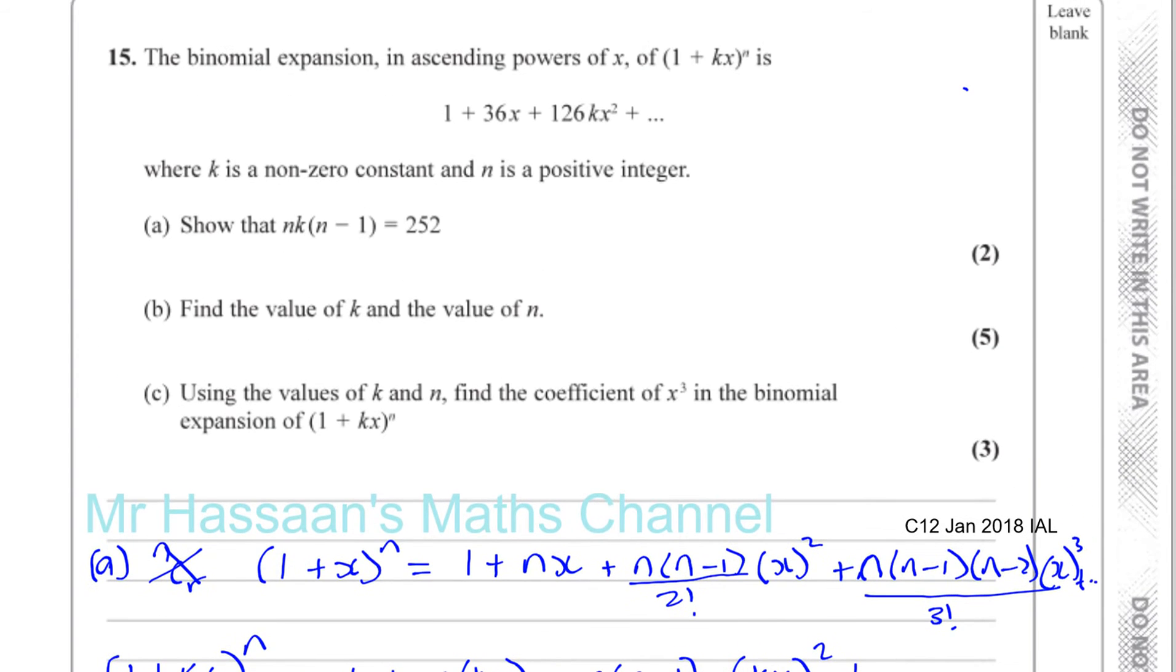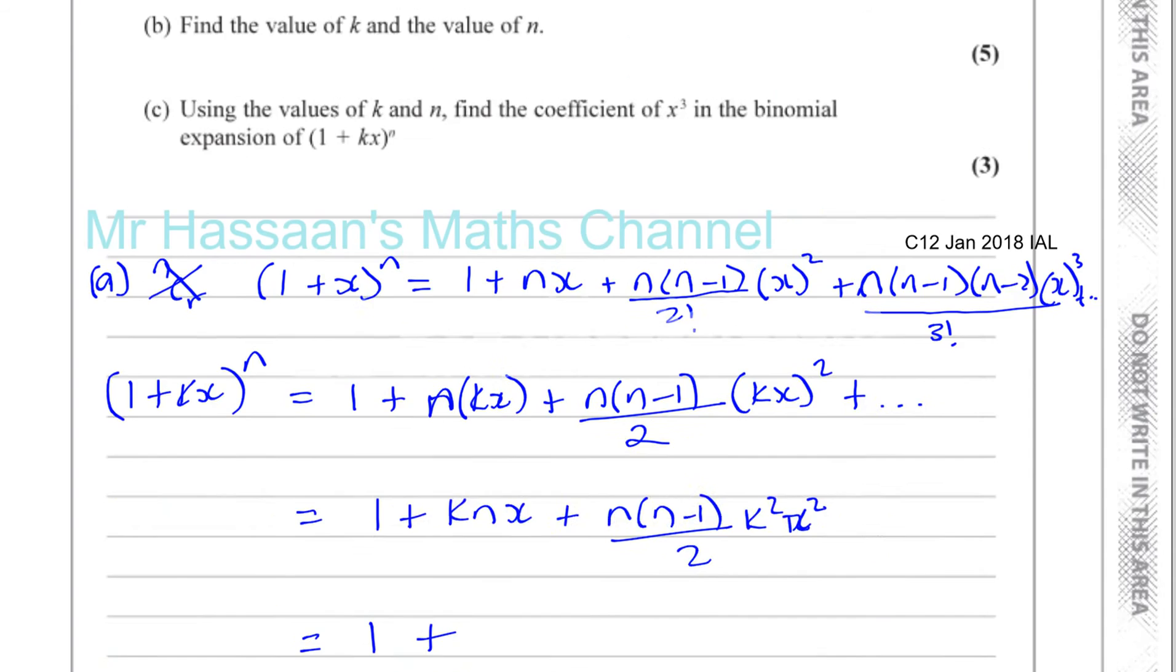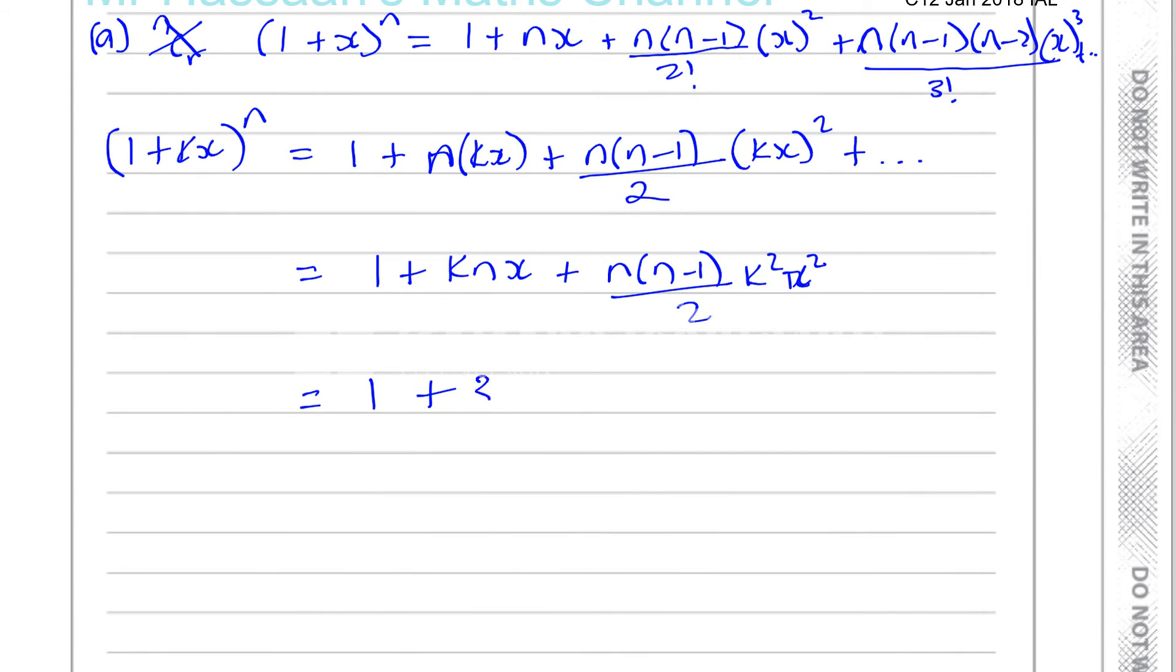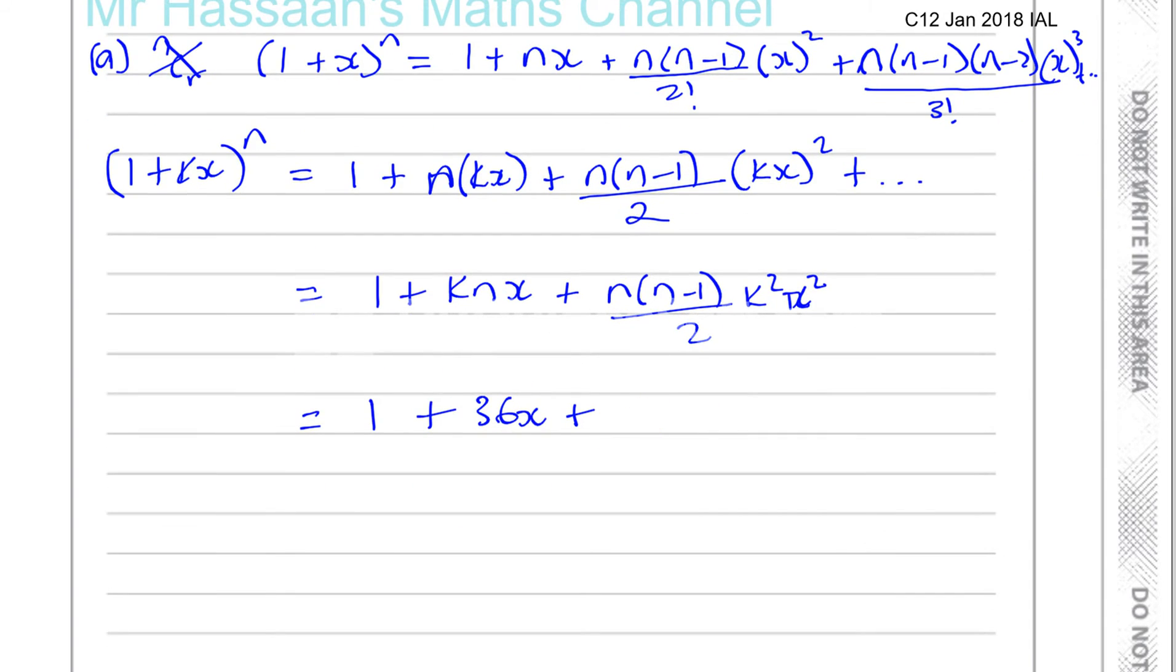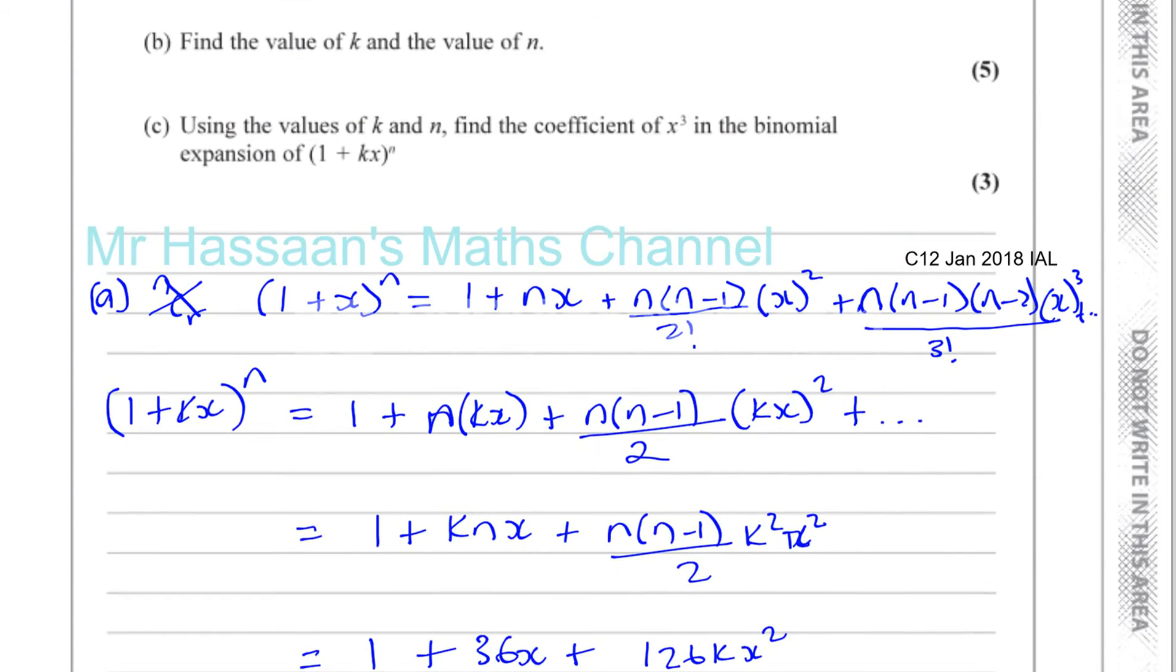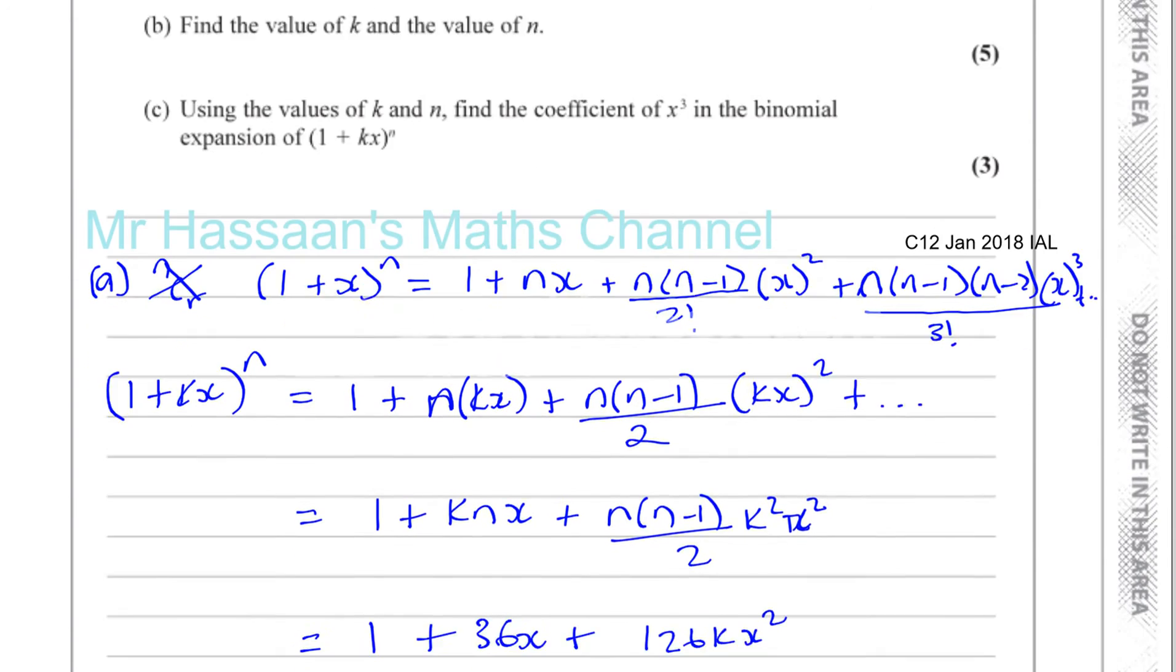Now, it says that the expansion of this is equal to 1 plus 36x plus 126kx squared.